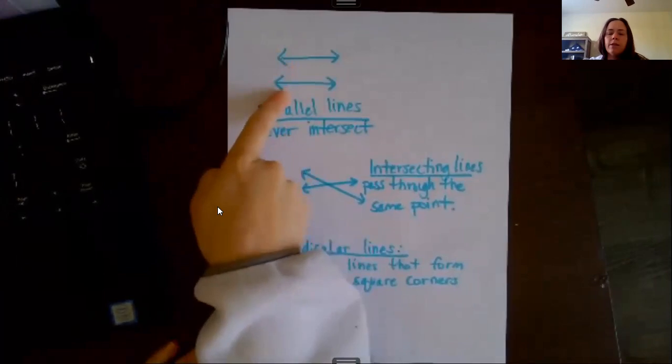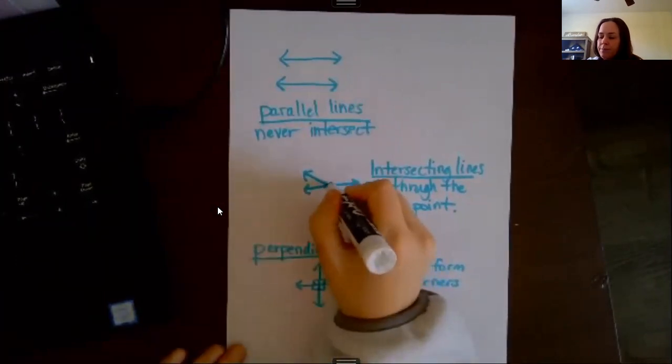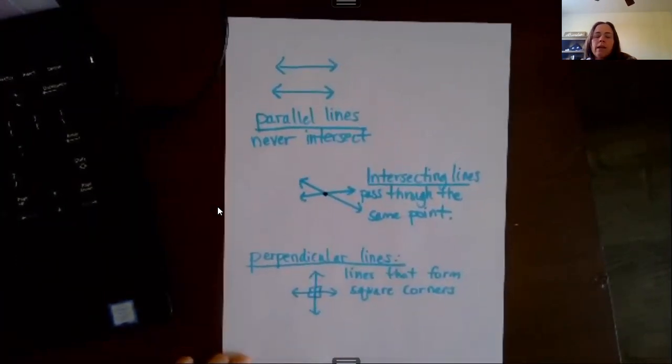Then we have intersecting lines, which is just that they pass through the same point. So here's the point that maybe they pass through, and they go on in infinite directions.